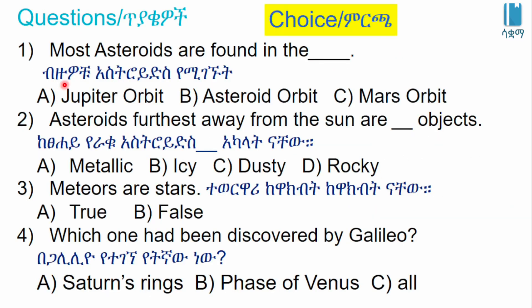Most asteroids are found in the blank. A: Jupiter belt. B: Asteroid belt. C: Mars belt. The asteroid belt is the correct answer.